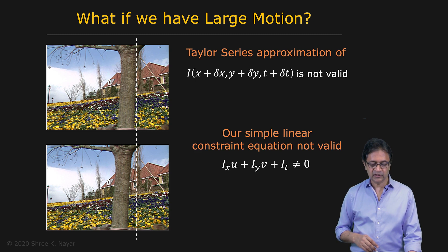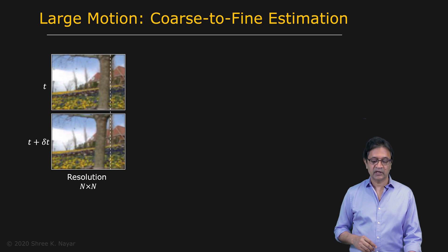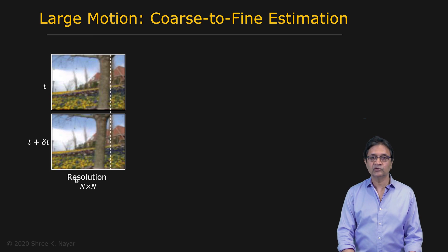So what do we do in this case? There's a simple trick that we can play here, which is by using what's called a resolution pyramid. Let's say that these are the images that were given to us taken at time T and T plus delta T, and let's say that the resolution of each image is n by n.